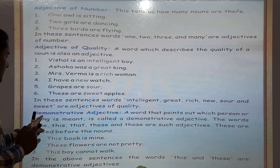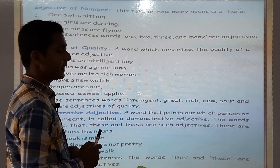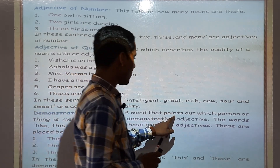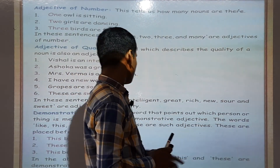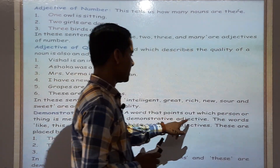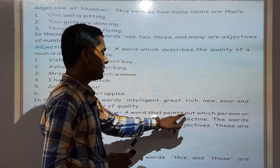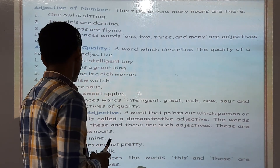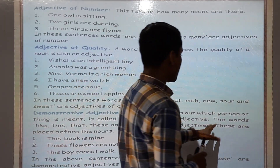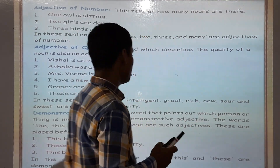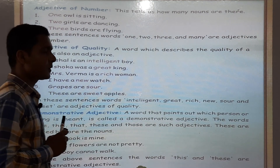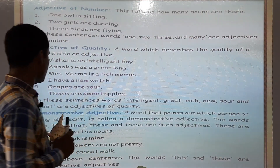Now next adjective hai — Demonstrative Adjective. A word that points out which person or thing is meant is called a Demonstrative Adjective. Yeh shabd jo kisi vyakti aur vastu ko point out karta hai, ingit karta hai, ishaara karta hai, batlata hai — woh kya kehlaata hai? Kaunsa adjective kehlaata hai? Demonstrative Adjective.